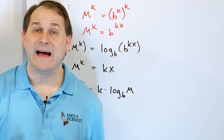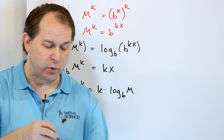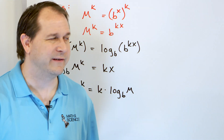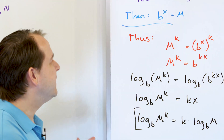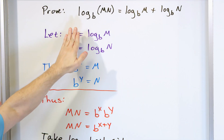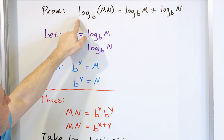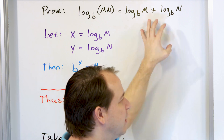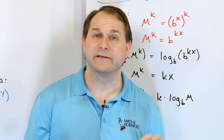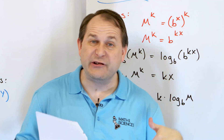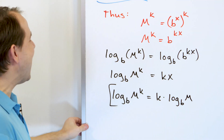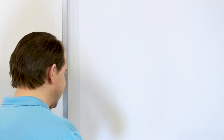That is the proof of the second law of logarithms — the one that deals with exponents. You can take an exponent out in front and then multiply by the log. Now the last one we're going to prove is the division rule: log of a quotient becomes subtraction of logs.